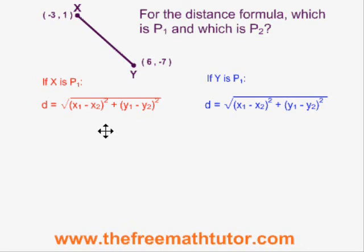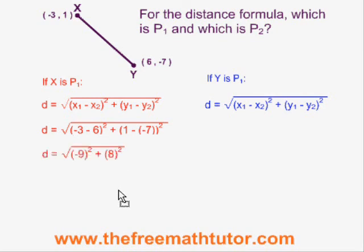In the red formula, I am making x point 1, which means x1 is negative 3, y1 is 1, x2 is 6, y2 is negative 7. When we plug these numbers in and simplify, we end up with negative 9 squared plus 8 squared, which gives us 81 plus 64 for 145. The square root of 145 is our distance and it is 12.04 units.